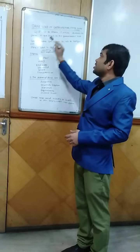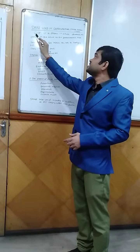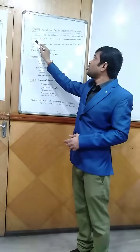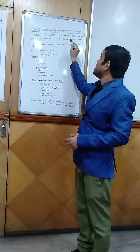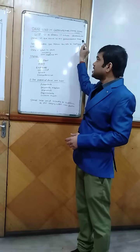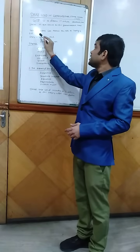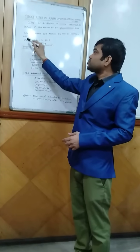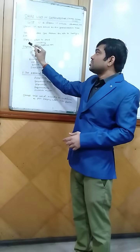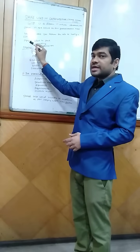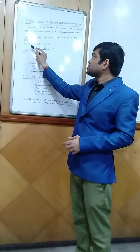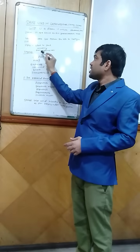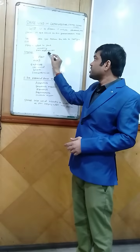GIST is a disease in which abnormal cells form in the tissues of the gastrointestinal tract, and genetic factors can increase the risk of having a gastrointestinal stromal tumor. The signs of gastrointestinal stromal tumors are blood in the stool, vomiting, or pain in the abdomen.